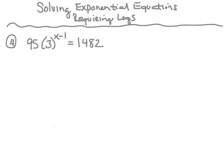Number four, we've got the exponential 95 times 3 to the x minus 1 power is equal to 14.82. Just as we did with the others, we're going to isolate the base and the exponent by dividing by 95. So I've got 3 to the x minus 1 equals 14.82 divided by 95, which gives me 0.156.